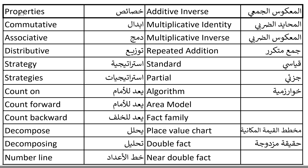Properties. Properties. Commutative. Commutative. Associative. Associative. Distributive. Distributive.